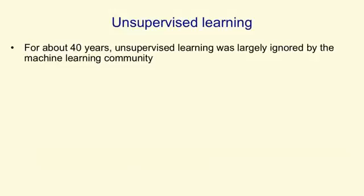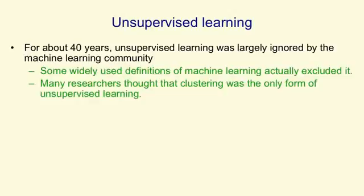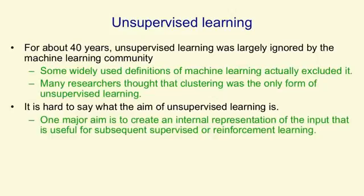In fact, they used definitions of machine learning that excluded it — defining machine learning as mapping from inputs to outputs — and many researchers thought that clustering was the only form of unsupervised learning. One reason for this is that it's hard to say what the aim of unsupervised learning is. One major aim is to create an internal representation of the input that is useful for subsequent supervised or reinforcement learning, and the reason we might want to do that in two stages is we don't want to use, for example, the payoffs from reinforcement learning to set the parameters for our visual system.